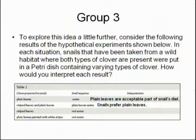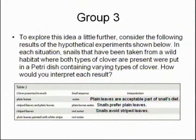Striped leaves were not eaten. What's the interpretation there? The snails don't like them as much — they avoid them; they're unacceptable. And then the last one: the green leaves with a painted white stripe are avoided. How would you interpret that? It's a warning — that's the symbol of the thing they don't like to eat.